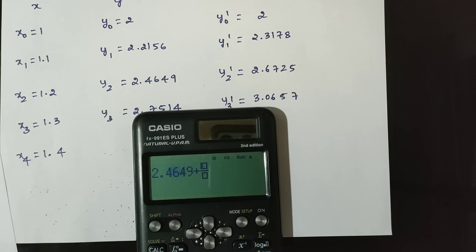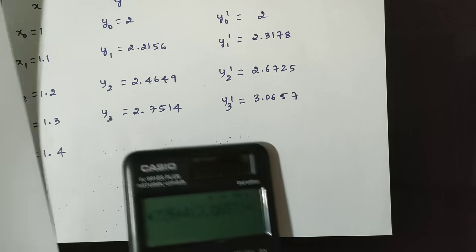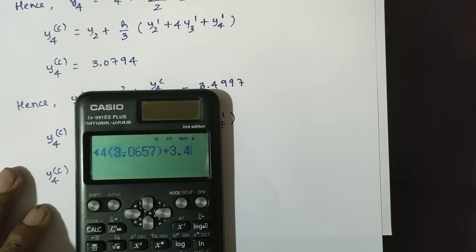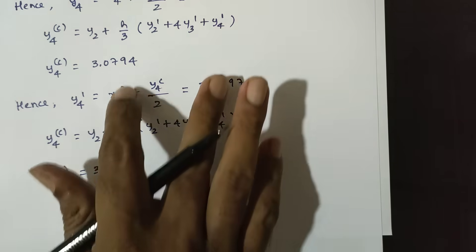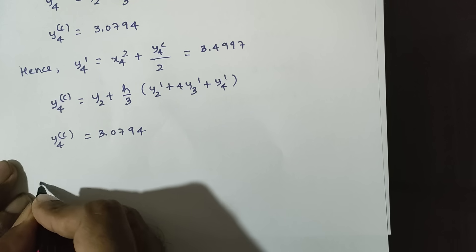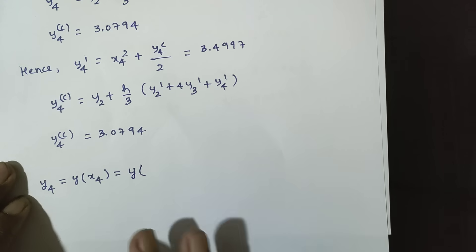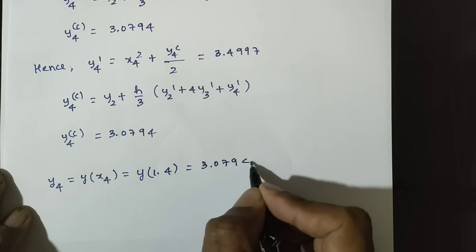With h = 0.1, bracket: y2' = 2.67, plus 4 × y3' = 3.065, plus y4' = 3. Updated y4' to code gives answer 3.0794. Since both corrector values agree, no second correction is needed. Therefore y4 = y(x4) = y(1.4) = 3.0794.